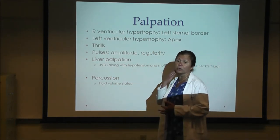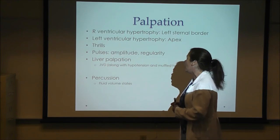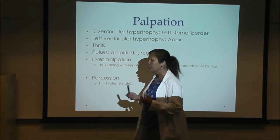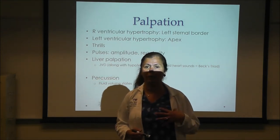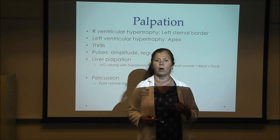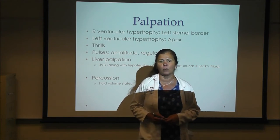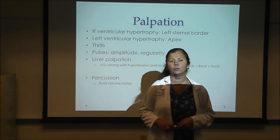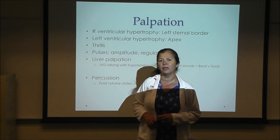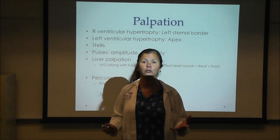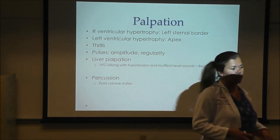Assessing JVD for hepatojugular reflux is also an indication of right ventricular heart failure. Percussion of the heart is limited by breast tissue, muscle, and ribs. The best use of percussion is to determine dullness indicating pleural effusion, which is a volume overload state present in patients with left ventricular heart failure or systolic heart failure.